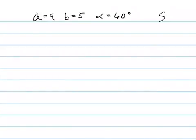So another ambiguous case because it's side side angle and we have A equals 4, B equals 5, and alpha equals 60. So let's draw our side in.